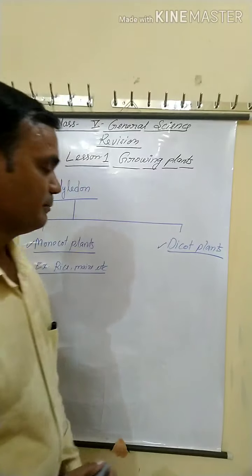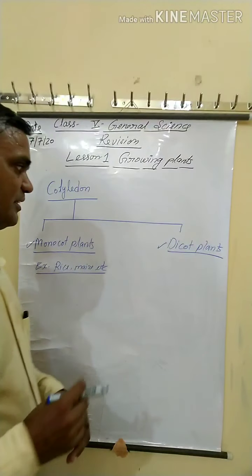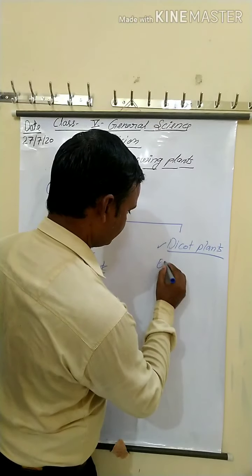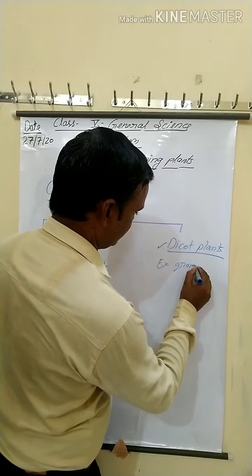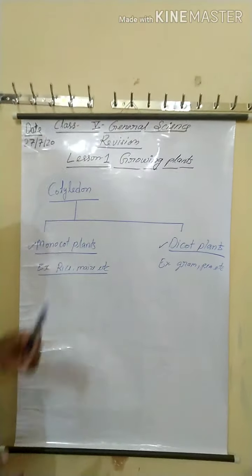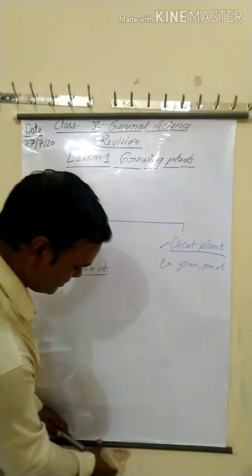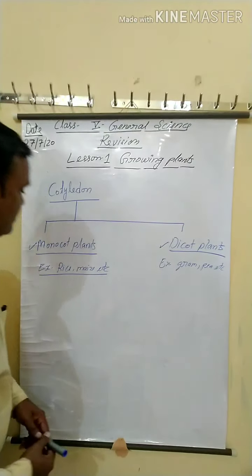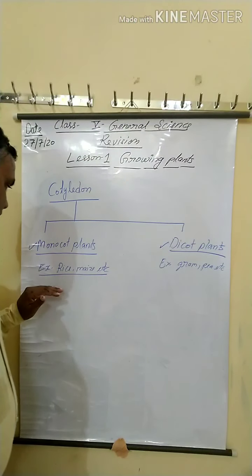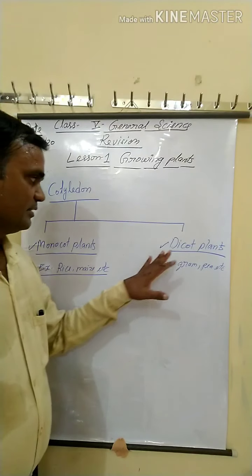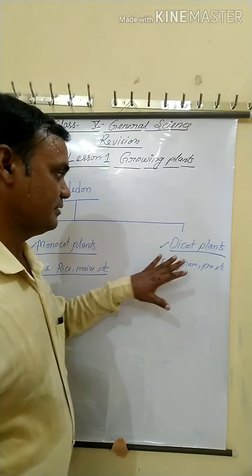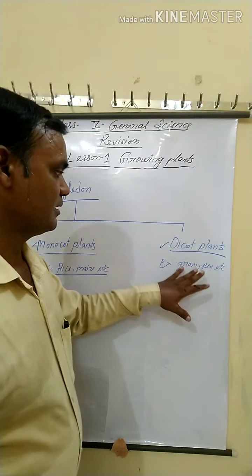Dicot plants: plants that have two cotyledons are called dicot plants. Examples: gram, pea, etc. To repeat — monocot plants have only one cotyledon, examples rice and maize; dicot plants have two cotyledons, examples gram and pea.